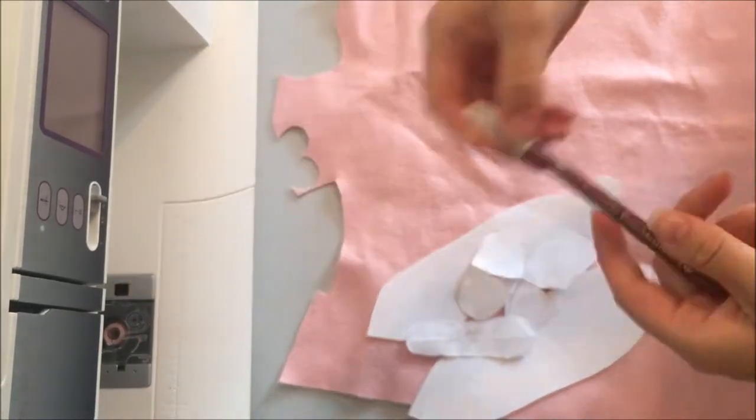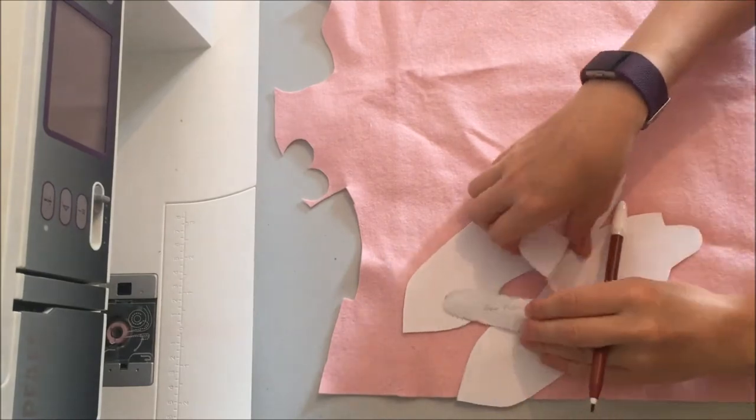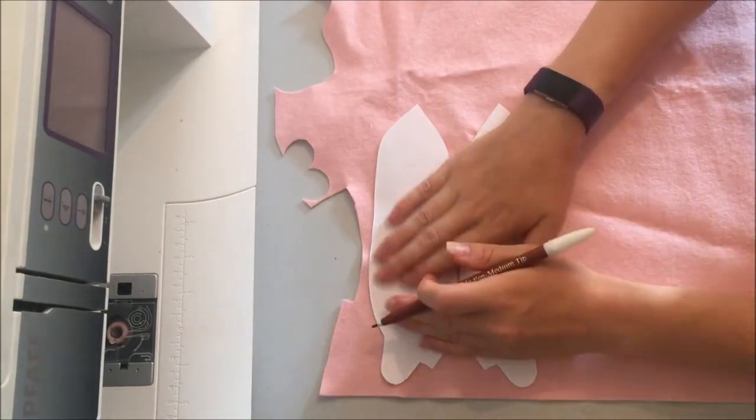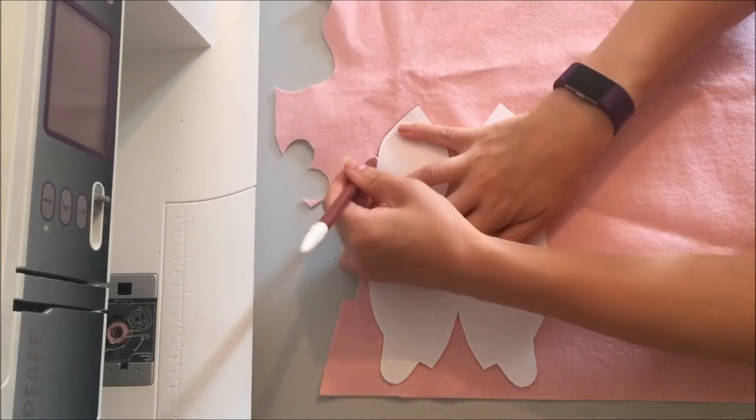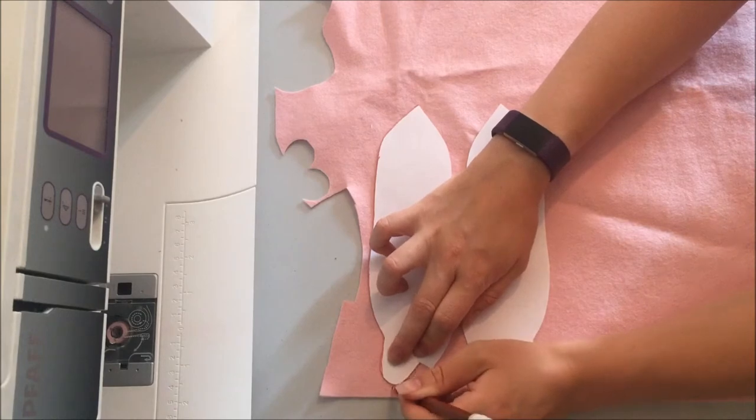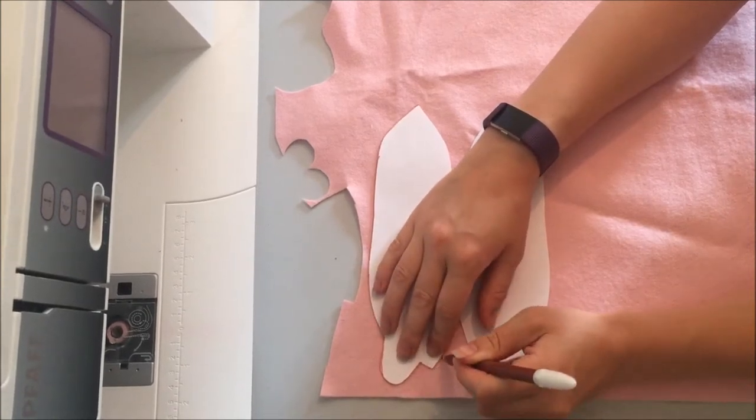I tend to use these water erasable pens in order to mark out, mainly because I don't include seam allowances on my pattern, so that they're easier to scale up or scale down. Now this bear you can easily scale down to half size, but I would suggest that you make the arms a little bit chubbier if you're trying to make a little baby bear to go with your set.